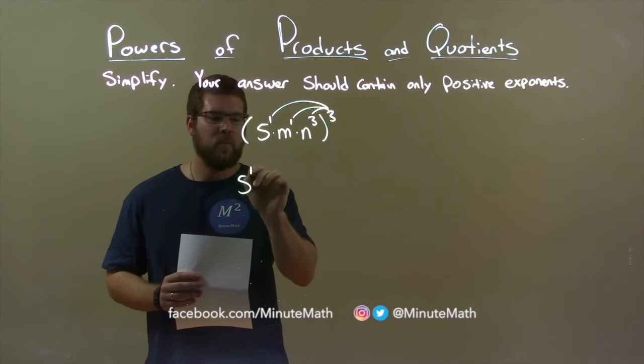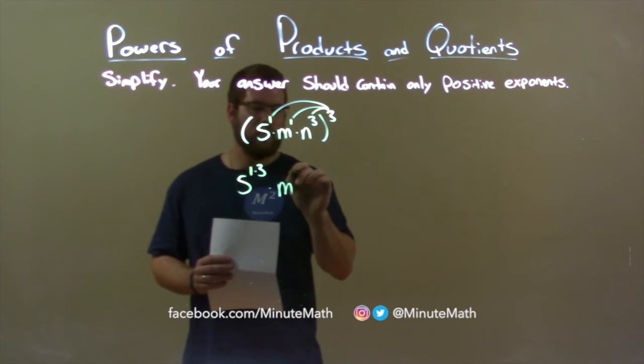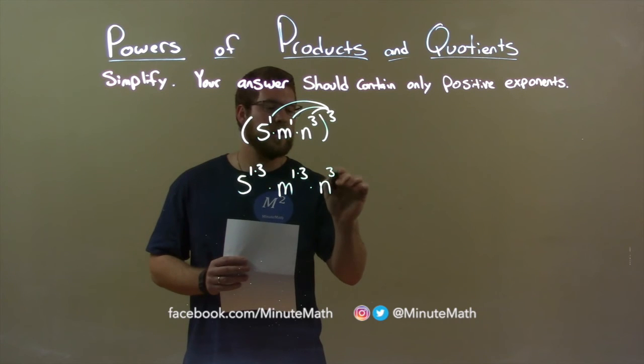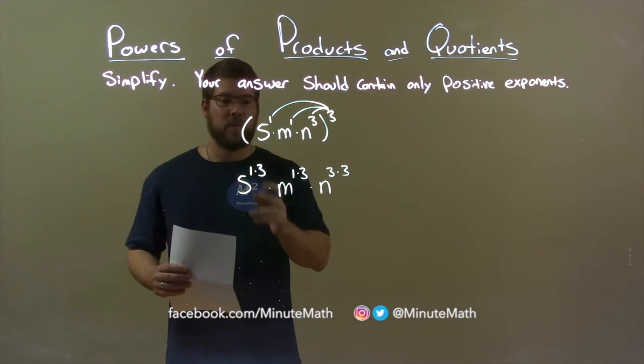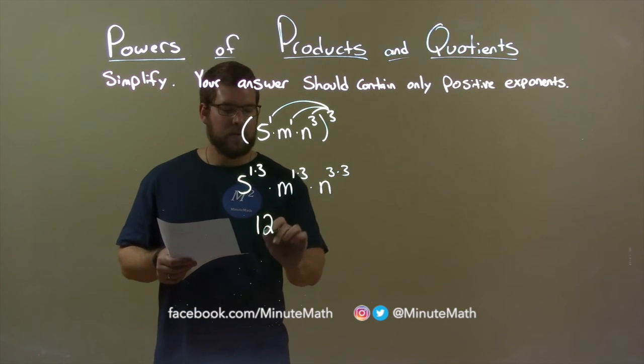So, 5 now becomes 5 to the 1 times 3 power. m now becomes to the power of 1 times 3, and n is to the power of 3 times 3. Well, now we can simplify. 1 times 3 is 3, and 5 to the third power is 125.